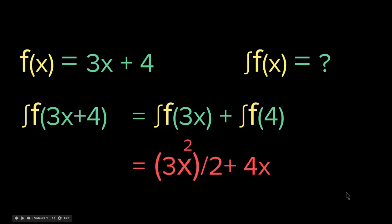Plus the integral of 4. 4 is a constant, and the integral of a constant is 4 times whatever we are integrating with respect to. Here we are integrating with respect to x, so it becomes 4x. So the integral of 3x + 4 is 3x squared over 2 plus 4x. And don't forget we have a plus constant, but we are not writing it for simplicity.